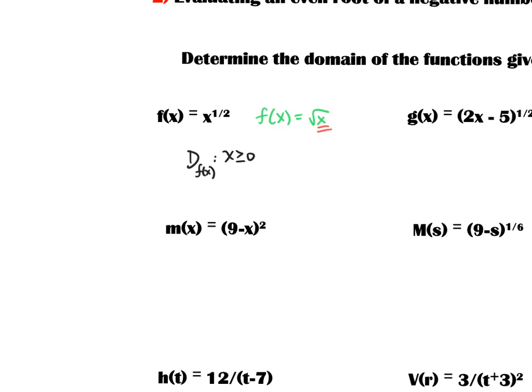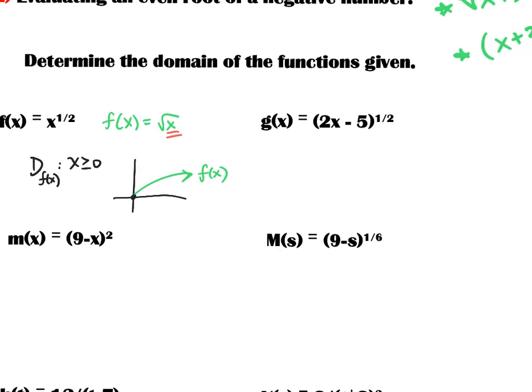If x is greater than or equal to zero, the function — the square root of x — does exist. Here's what the square root of x looks like; we'll talk about this in a following section. Clearly the inputs are x greater than or equal to zero.